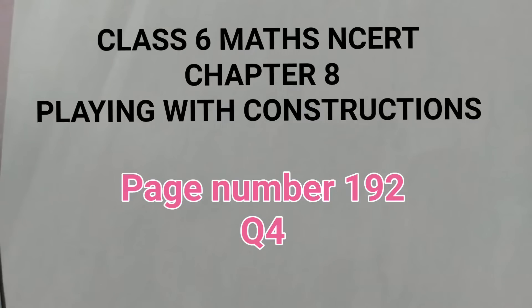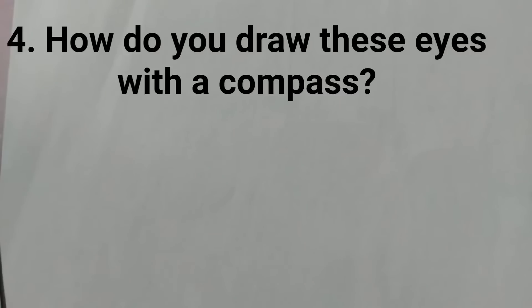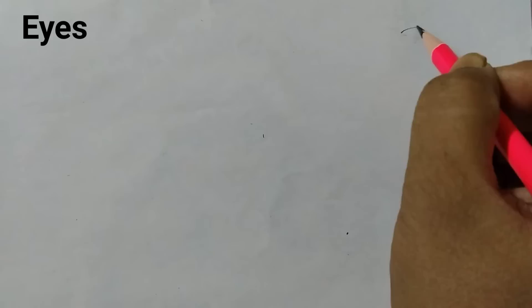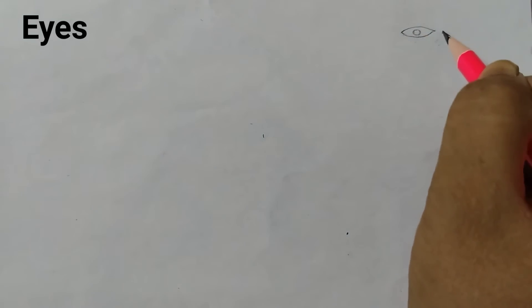This is given on page number 192 of class 6, chapter 8, playing with constructions. We have already completed question number 1 and 2 and this is question number 4. The question is, how do you draw these eyes with a compass? The eyes look like this - there is a circle inside, then a little gap, then a circle inside. So let us see how to do it.